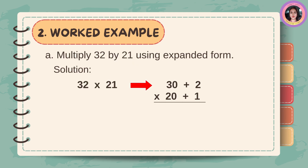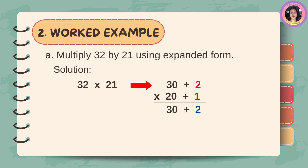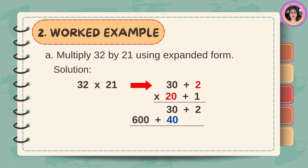Let's multiply 32 by 21 using expanded form. 32 times 21 is equal to 30 plus 2 times 20 plus 1. 2 times 1 is equal to 2 and 30 times 1 is equal to 30. 2 times 20 is equal to 40 and 30 times 20 is equal to 600. Bring down 2, then 30 plus 40 is equal to 70, then bring down 600. 600 plus 70 plus 2 is equal to 672.